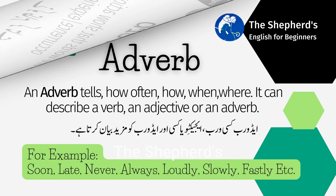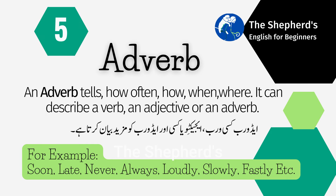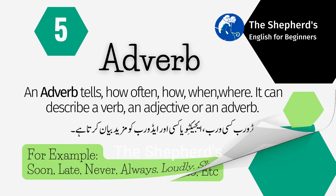Number 5. Adverb. An adverb tells how often, how, when, where. It can describe a verb, an adjective, or adverb. For example: soon, late, always, loudly, slowly, fastly, etc.